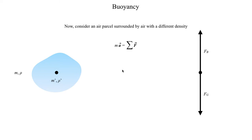Back in lecture one we introduced Newton's second law: the net acceleration acting on an object is equal to the net force divided by mass, or equivalently, mass times acceleration equals the net force, which is the sum of all forces. Here we only have two forces, and both act in the z direction — the vertical direction — so our equation becomes really simple.